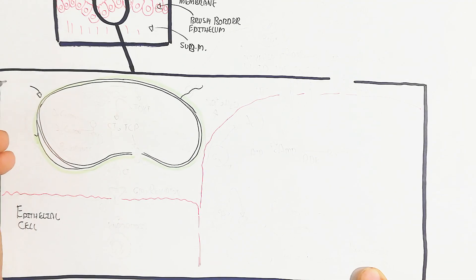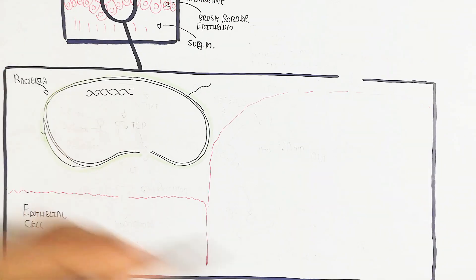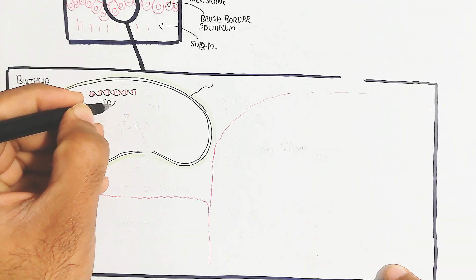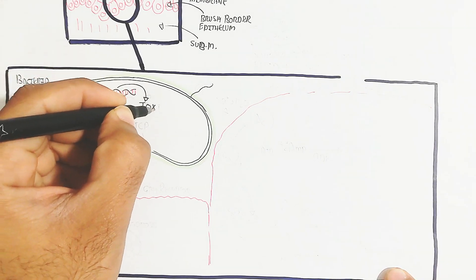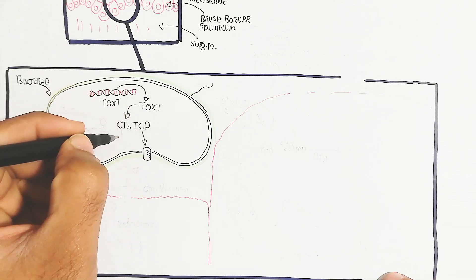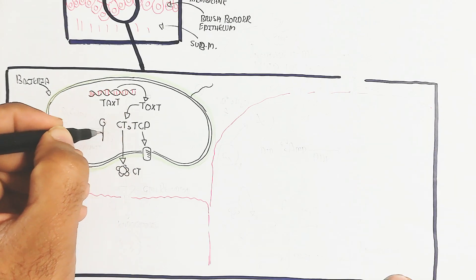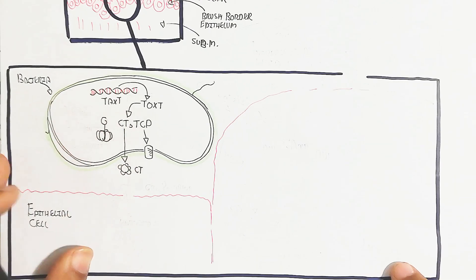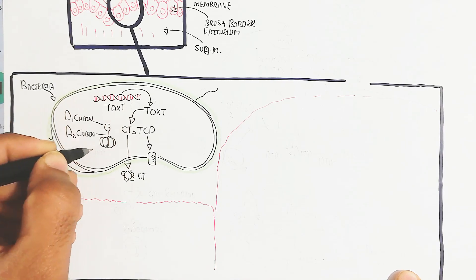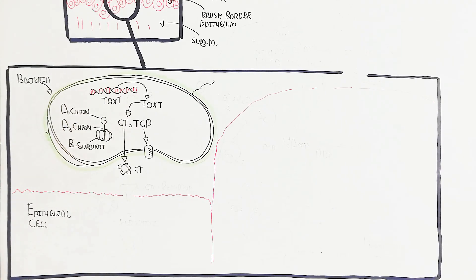This is the epithelial cell in bigger picture, and this is the bacteria. The bacteria contains DNA, and the DNA contains genes. ToxT - this ToxT gene produces and transcribes into toxin T. This toxin T will trigger other genes to transcribe the cholera toxin and TCP. This cholera toxin contains A1, A2 chain and beta subunit.